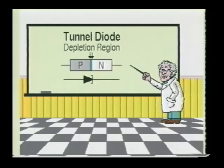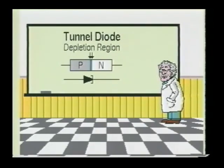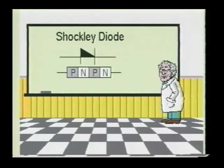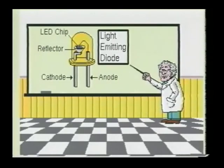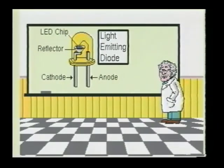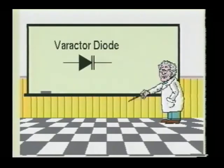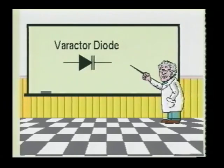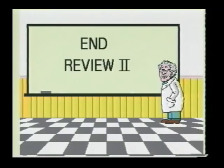Tunnel diodes have a very narrow depletion region, which causes the device to have a very fast response to input signals. Tunnel diodes may be operated in either their reverse or forward bias conditions. The Shockley diode is a four-layer device that is commonly used in oscillator and triggering circuits. Light-emitting diodes are made from gallium phosphide, gallium arsenide, or gallium arsenide phosphide. The recombination of the majority charge carriers causes the LED to give off energy in the form of light. The varactor diode is used as a voltage variable capacitor. Varactors are normally operated in the reverse bias mode, and its capacitance is that of the depletion region. This completes review number two.